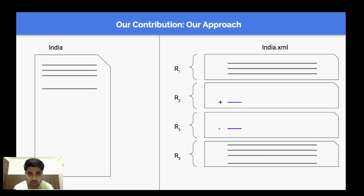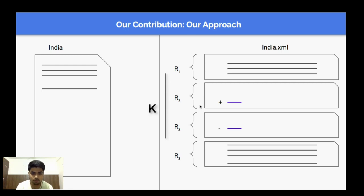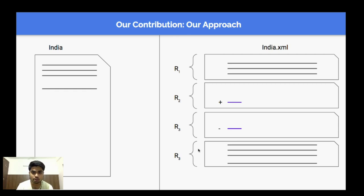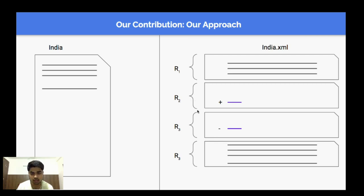What we proposed was: rather than just storing the difference between every two consecutive revisions, at a block size of k we store the difference between every two consecutive revisions, but at the kth block we store the full revision, and we repeat this process. So if you want to extract any revision — let's say revision number three — you just have to go till the kth block. With a block size k of 2, you just have to extract two revisions recursively, and in a constant amount of time you can get any revision.